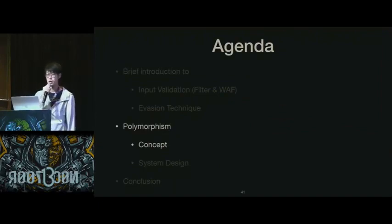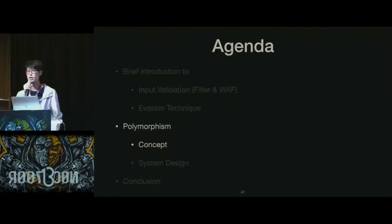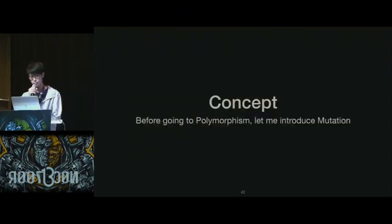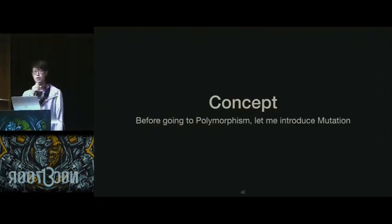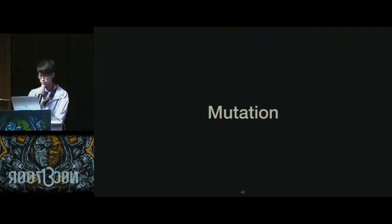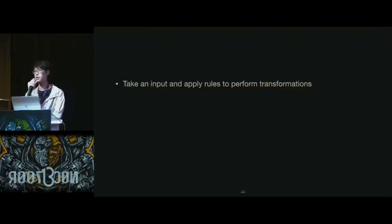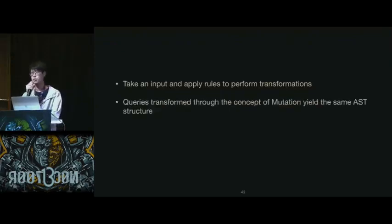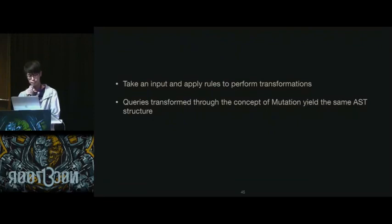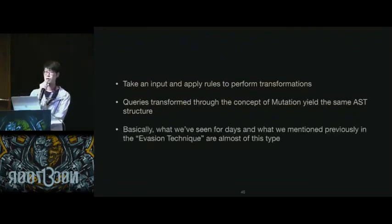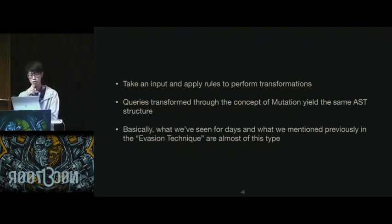We have finally finished our introduction to both protection and evasion techniques. Now I would like to expand on what polymorphism is in SQL injection. But hold on — before going to polymorphism, I want to talk about mutation first, because they are mutually related. Mutation means we are given an input, and we do transformations by rules. Those transformed queries will yield the same AST structure. In fact, SQL injection attacks that we have seen and mentioned previously using evasion techniques are almost all of this type.